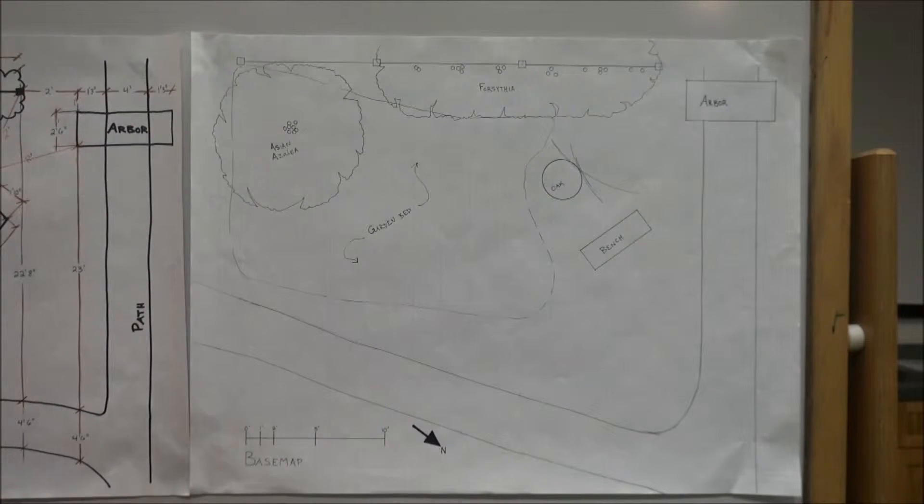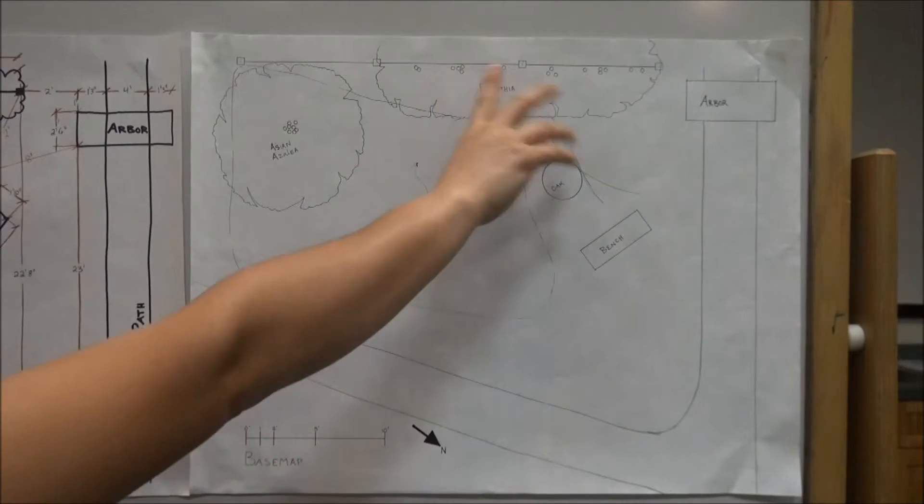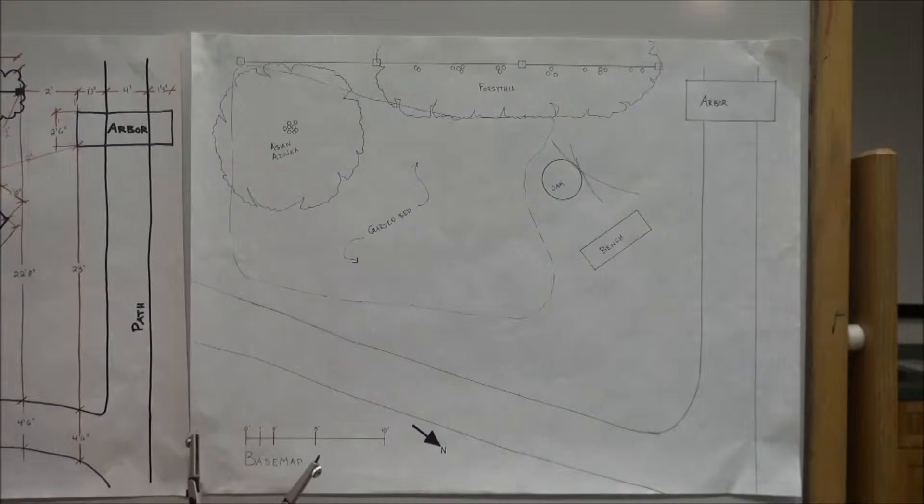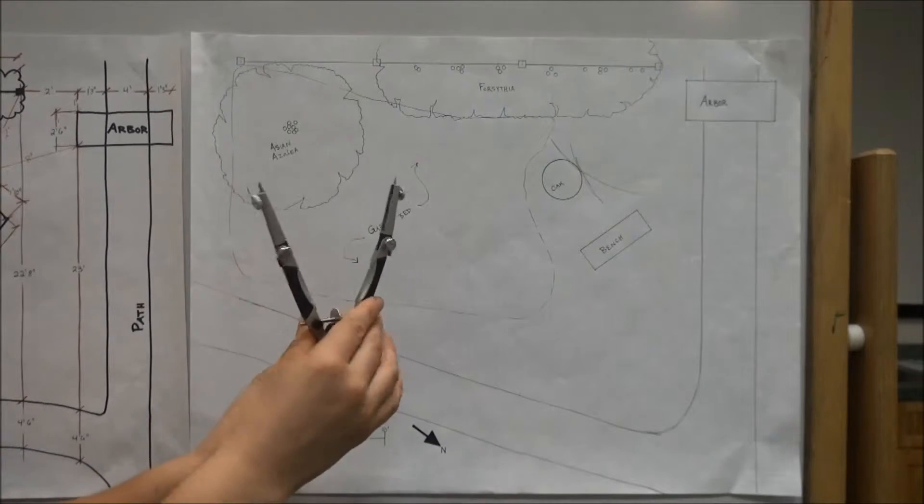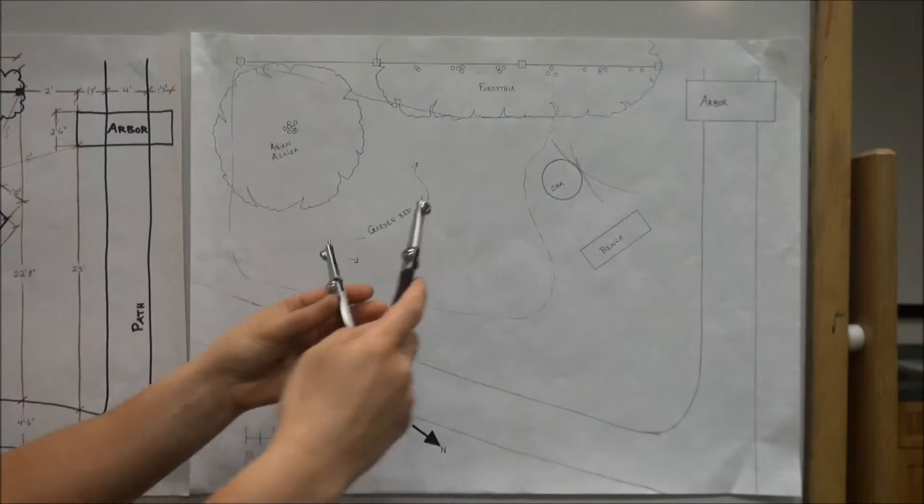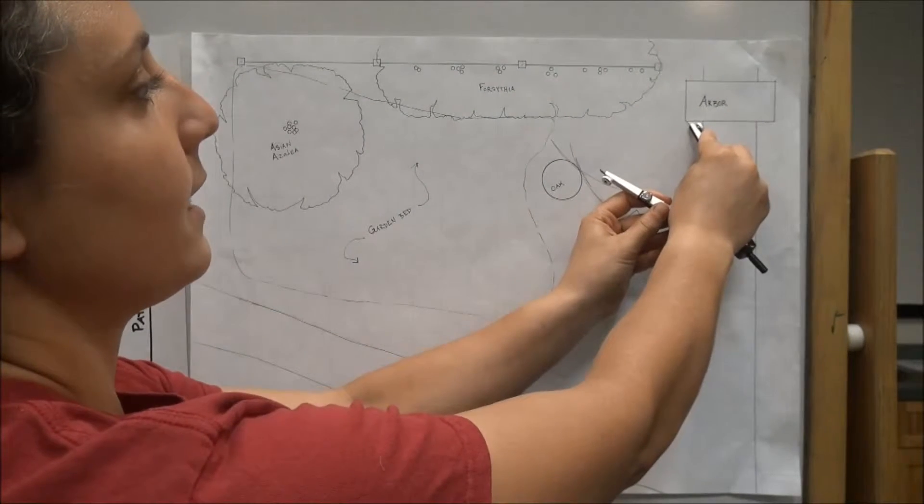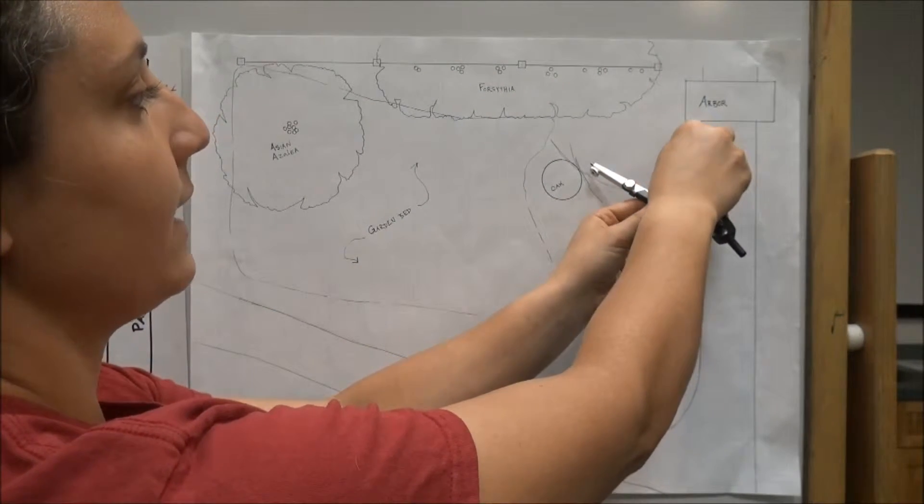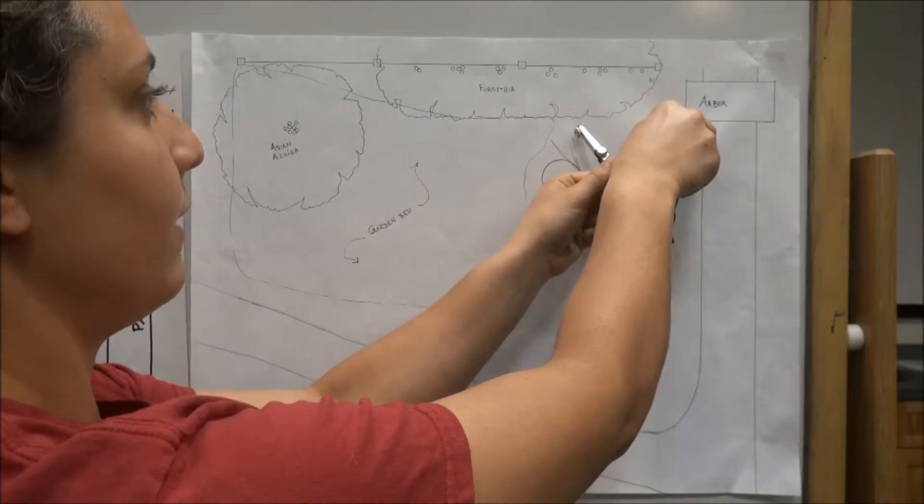So I'm going to translate that onto my to scale map and I want to first find eight feet. So that's five, six, seven, eight feet on my bar scale. This is a bow compass and it's measured out to eight feet. This is the center of this circle's radius and I'm just going to kind of draw an arc.